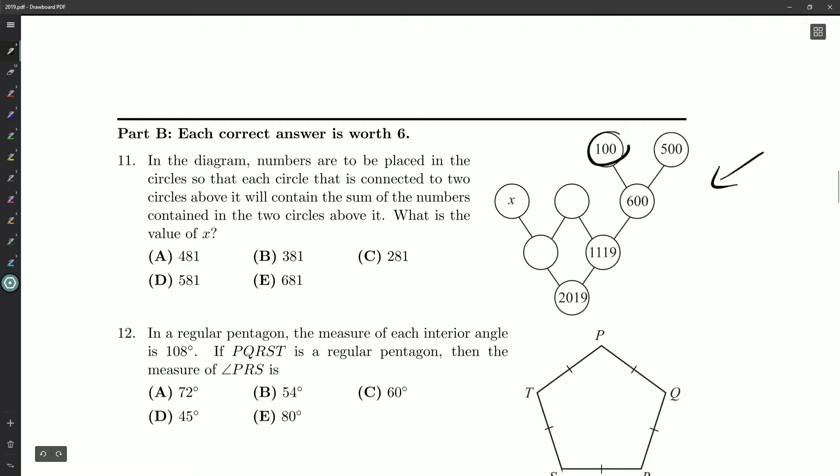but I see I've got 100 here and 500 here. You add those up, you get 600. So that's how it works. Add the two above, get the one below. What is the value of x? We've got x hidden over here.